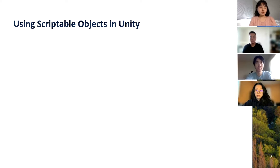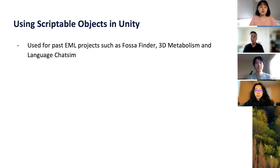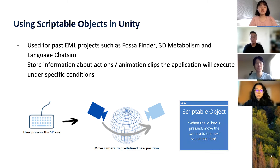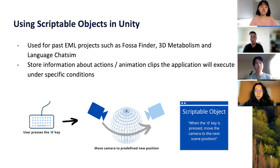To create a guided tour of a 3D object in Unity requires us to play a specific animation clip given some conditions. For example, you might want to move the camera to a new position when the user presses some key. Information about these actions and animation clips of the application is stored in something called Scriptable Objects. We have been using this for EML projects such as Fossil Finder, 3D Metabolism, and Language Chasing.